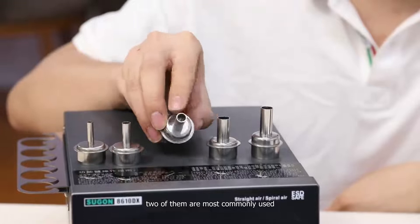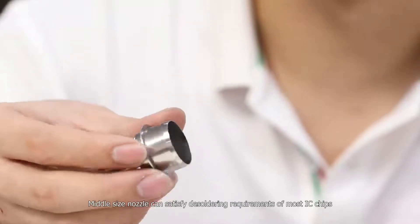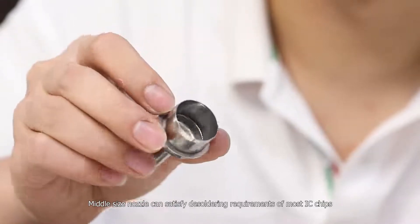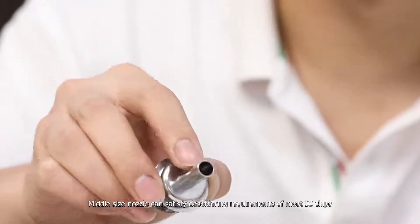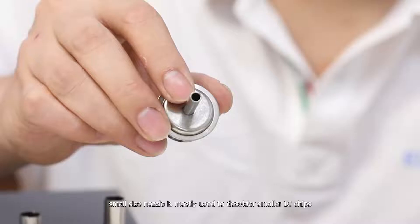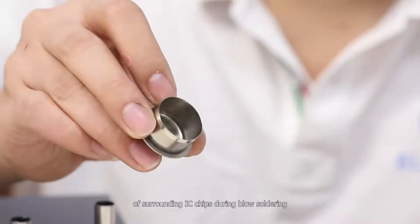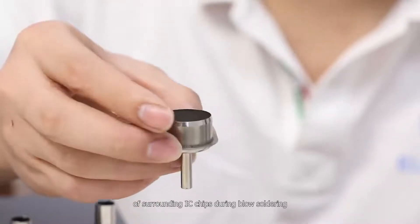Two of them are most commonly used. Middle size nozzle can satisfy the soldering requirements of most IC chips. Small size nozzle is mostly used for smaller IC chips. It can prevent overheating or melting solder paste of surrounding IC chips during blow soldering.